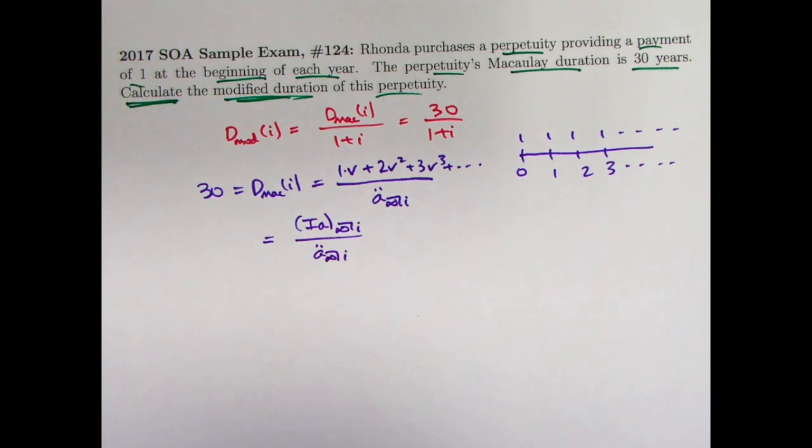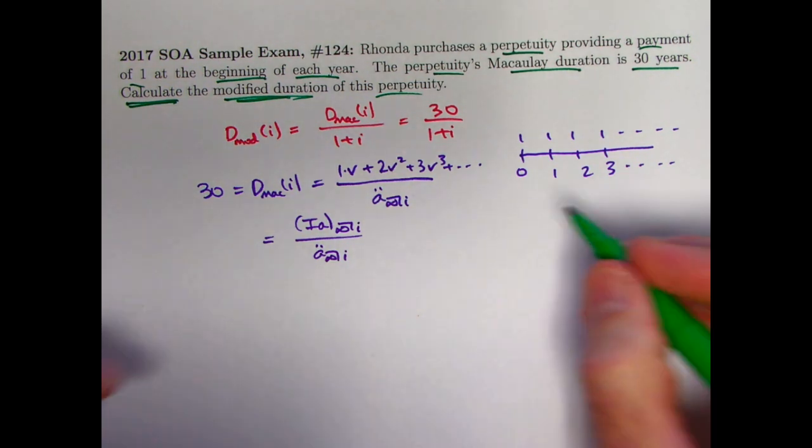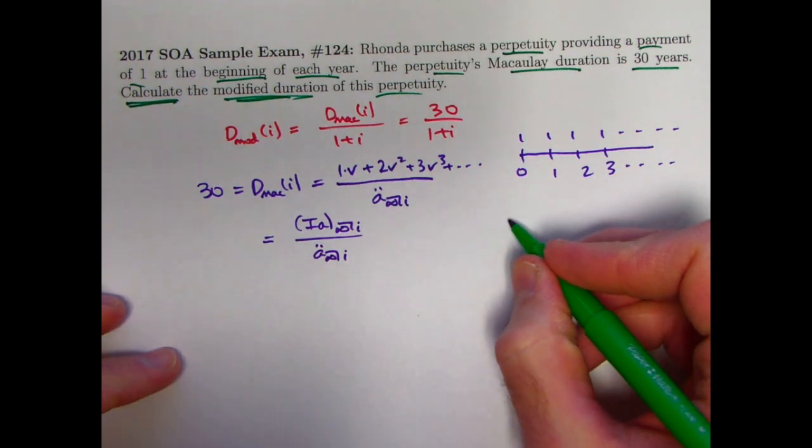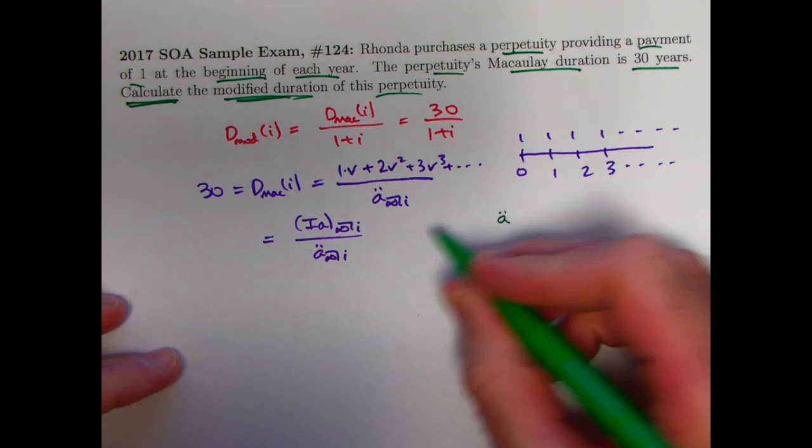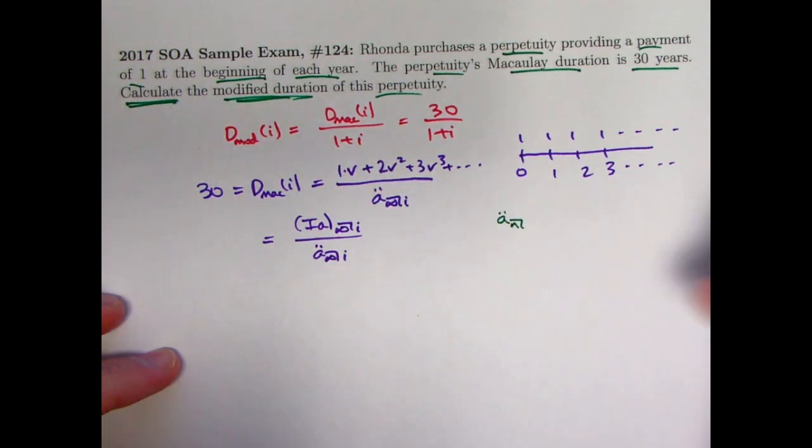Now you may have the formulas for these things memorized, and that's great if you do. If you don't, well, maybe you have the formulas for a double dot n and Ia n memorized, and then you could just use those formulas and let n go to infinity.